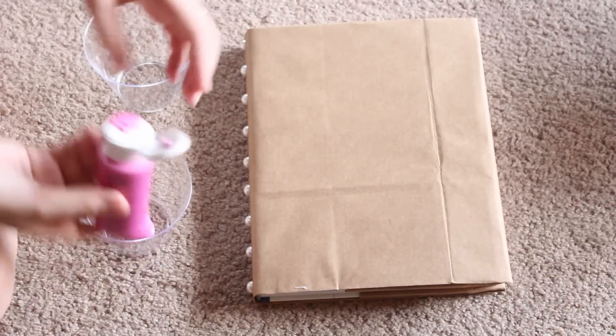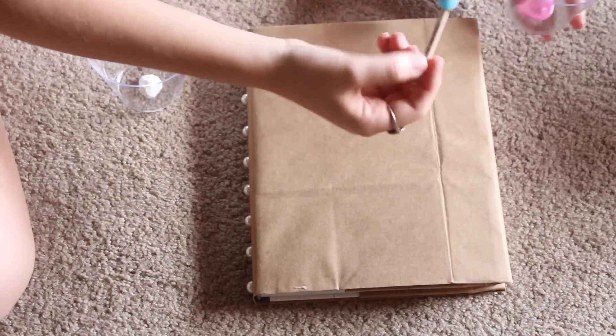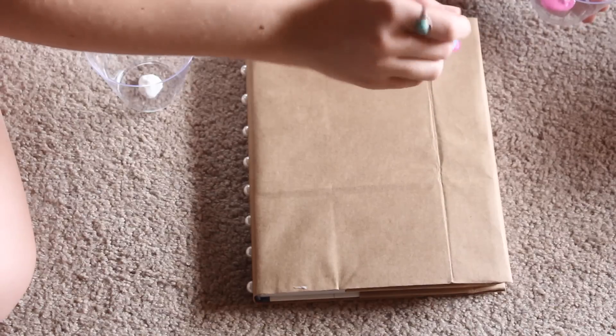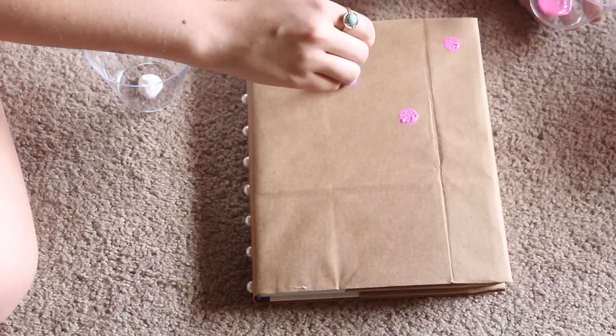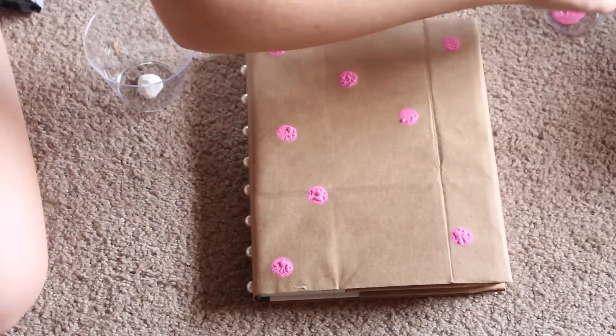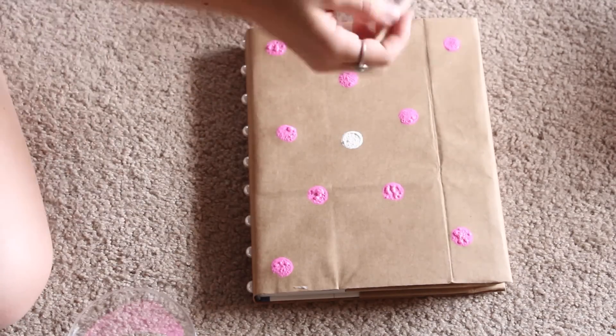So once you have that done, you're going to take your two paint colors, I'm using pink and white, and you're just going to get them on your little sponge dotting tool. And you're going to just start adding polka dots. And you might notice that there are going to be some bubbles on your polka dots. Don't worry about it. When it dries, those bubbles pop and it doesn't do anything to it. So don't worry about that. I was a little bit worried about the bubbles, but it was okay.